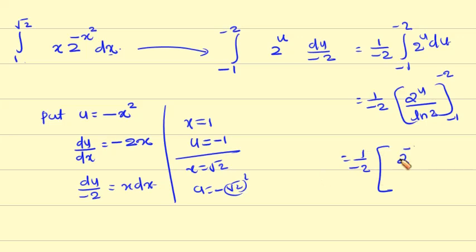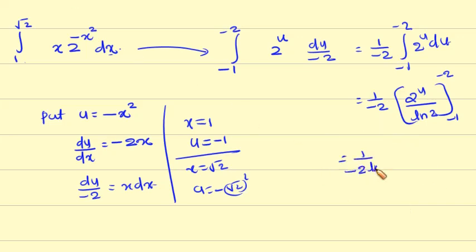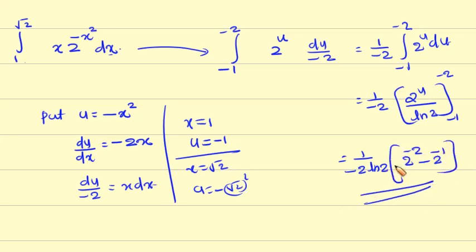That equals 1 by minus 2 ln 2 into 2 raise to minus 2 minus 2 raise to minus 1. This is the final answer.